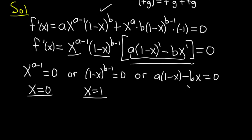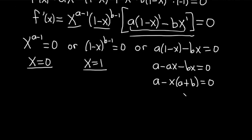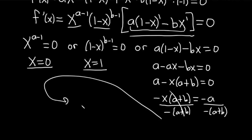The third factor, a(1 minus x) minus bx = 0. Distributing: a minus ax minus bx = 0, which factors as a minus x(a plus b) = 0. Solving: x(a plus b) = a, giving us the critical number x = a over (a plus b).